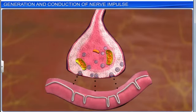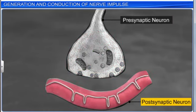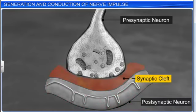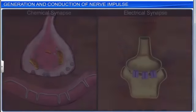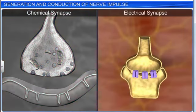A synapse is formed by the membranes of a pre-synaptic neuron and a post-synaptic neuron, which may or may not be separated by a gap called the synaptic cleft. There are two types of synapses on the basis of the nature of transfer of information: chemical synapses and electrical synapses.